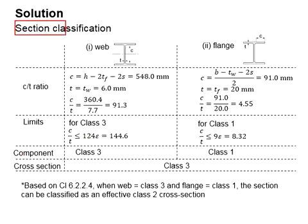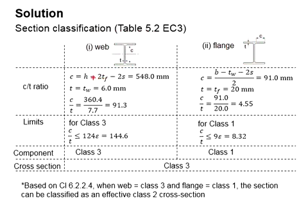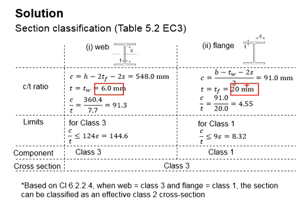Next, you need to determine the classification. Refer to Table 5.2 in Eurocode 3. The graphical representations are given here. Determine the relevant c and t values for the web and the flange, then compute the actual c/t ratio of the web and the flange, which are 91.3 and 4.55 respectively.